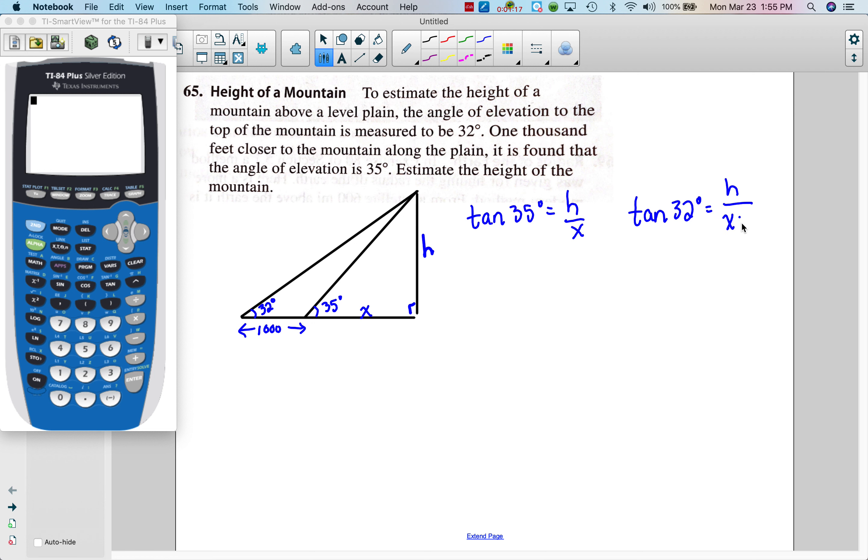So I'm going to solve this one for H, so I get H equals X tangent 35 degrees, and here we're going to have X plus a thousand tangent 32 degrees equals H. So if H equals this, H equals this, we can set them equal to each other.